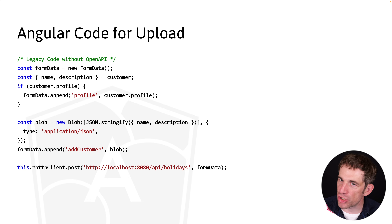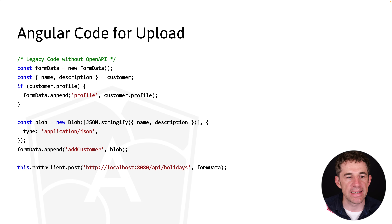In Spring this is easy: we constrain the media types of our endpoint to 'multipart/form-data' and instead of @RequestBody we use @RequestPart, which is the right annotation for multipart form data. One part is the JSON DTO, the other is the actual file (MultipartFile). The names must match: in this case 'addCustomer' for the JSON part and 'profile' or 'cover' for the file.